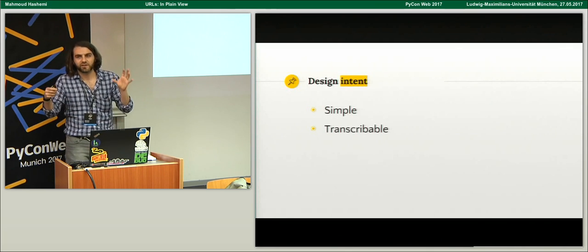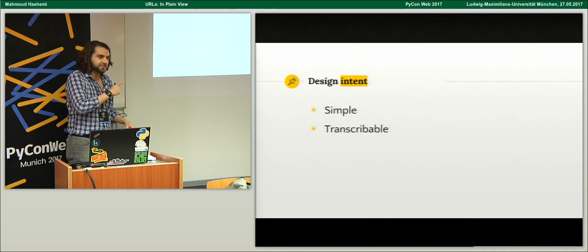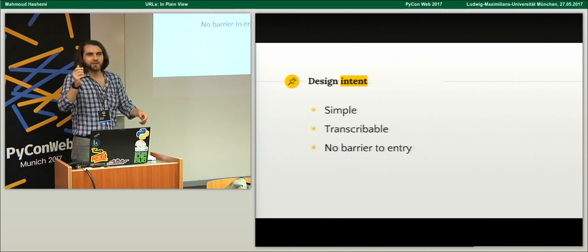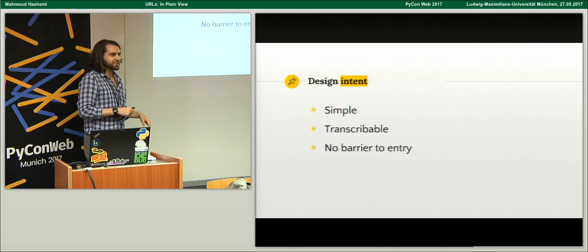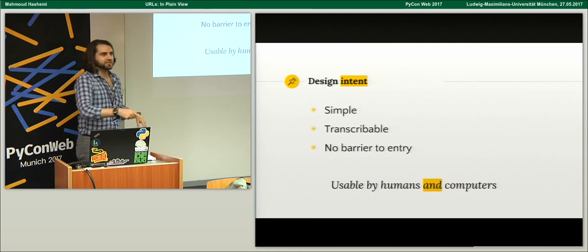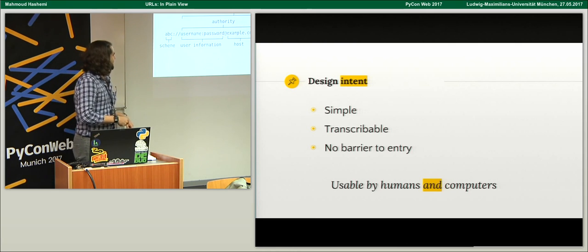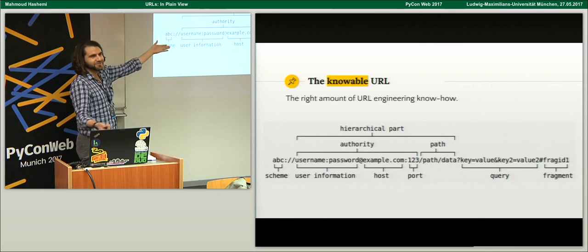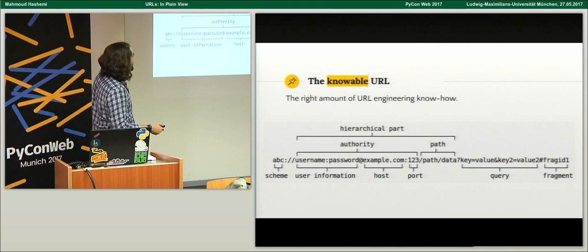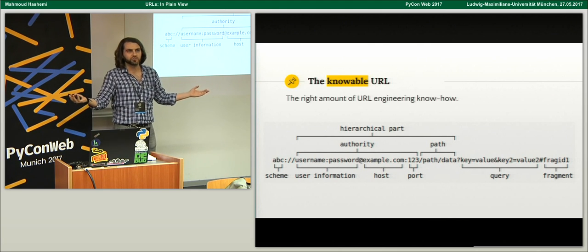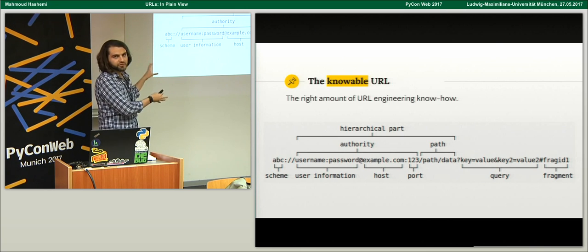We're going to focus instead on what a URL really is: something simple, something transcribable — meaning I can write it down, like that kid did to Santa. There should be no barrier to entry. You can take a pen and write it on the person next to you's hand. The point is, it should be usable by humans and computers. This is our interface to the web. We're going to learn the right amount of URL anatomy, focusing on this simple URL. A URL is actually something very complex that we often take for granted because we use it every day.